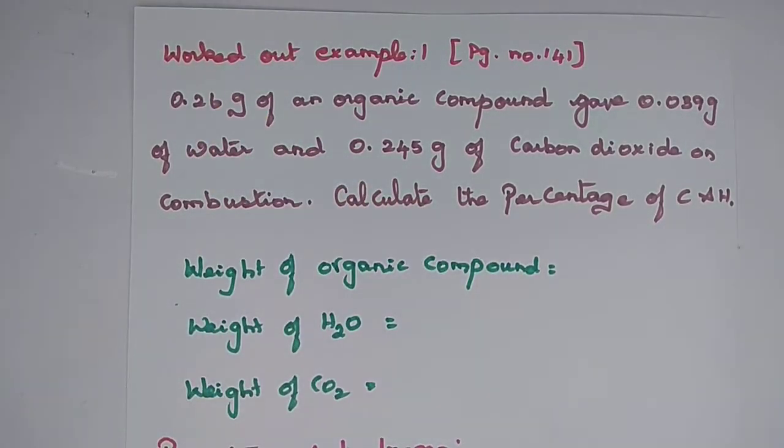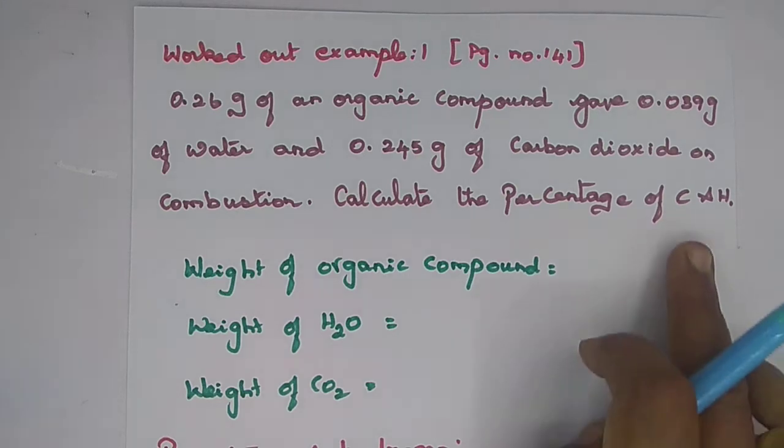Thillaparklaan, 0.26 gram of organic compound gave 0.039 gram of water and 0.245 gram of carbon dioxide on combustion. Calculate the percentage of carbon and hydrogen.